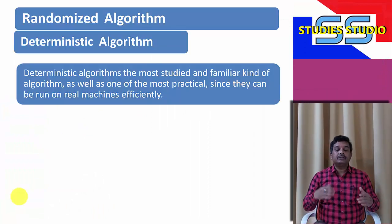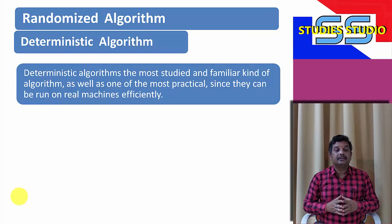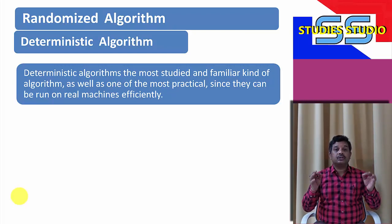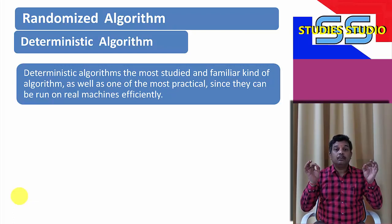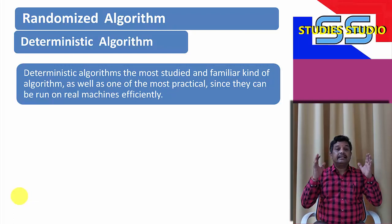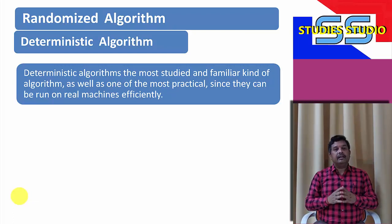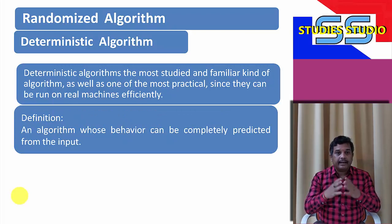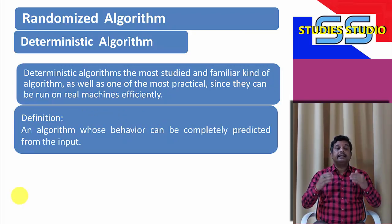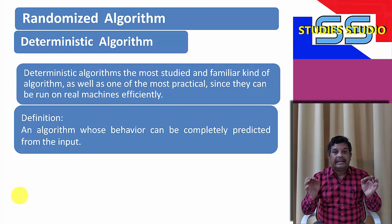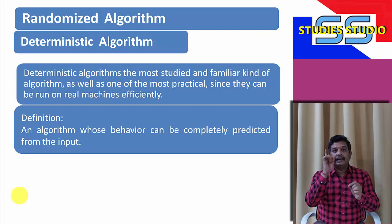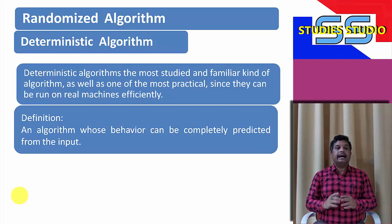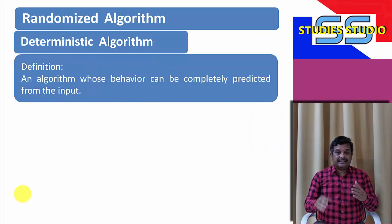Before we start with randomized algorithms, let us see what a deterministic algorithm is. Deterministic algorithms are the most studied and familiar kind of algorithm, as well as one of the most practical, since they can be run on a real machine very efficiently. An algorithm whose behavior can be completely predicted from the input is called a deterministic algorithm.